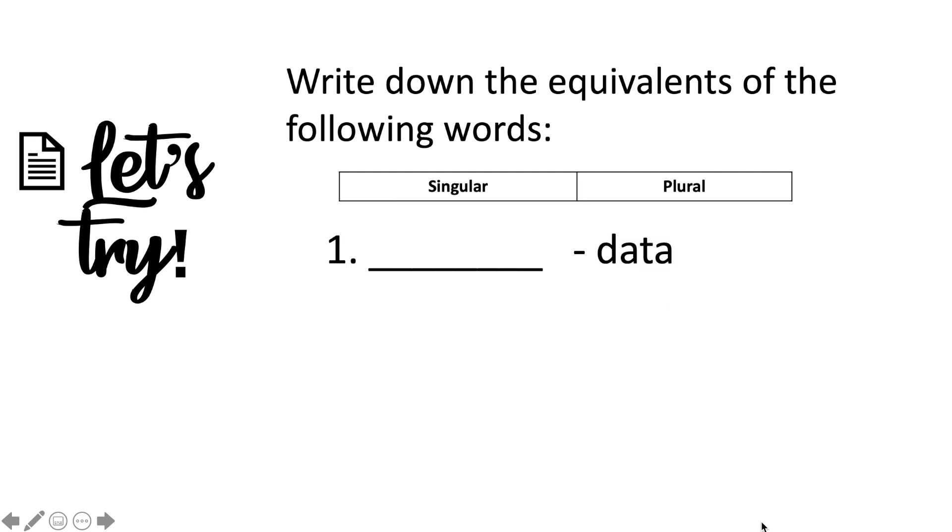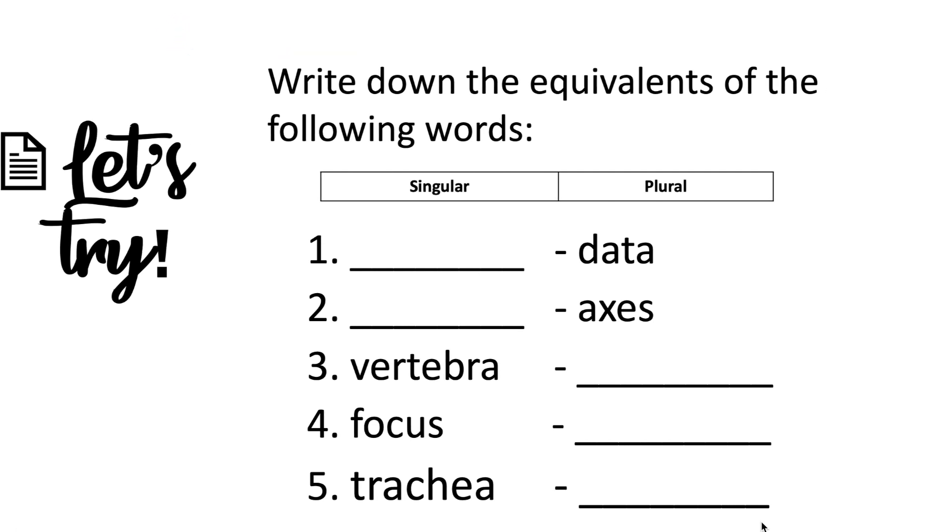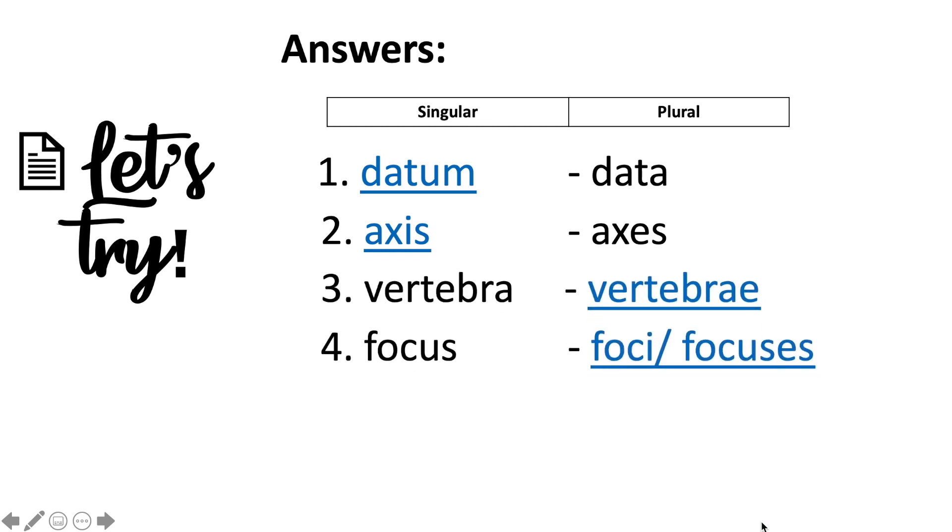Number one: data. Two: axes. Three: vertebra. Four: focus. Five: trachea. So give their equivalents. Done? Okay, let's check your answers. For number one it's datum. Number two: axis. Three: vertebrae. Four: foci or focuses. Five: tracheae. Okay, how's your score? That's very good.